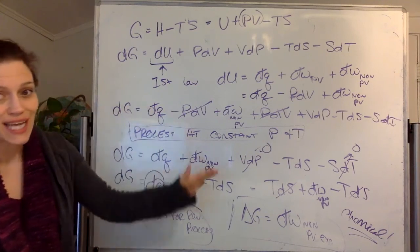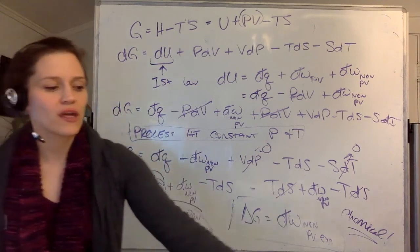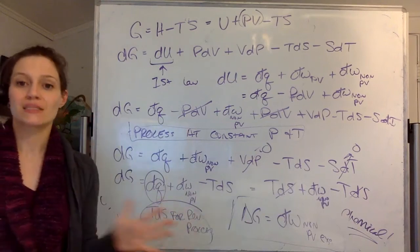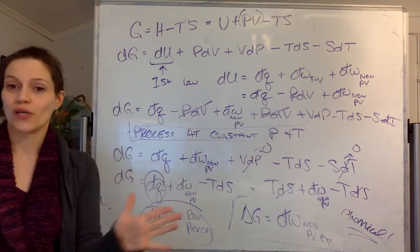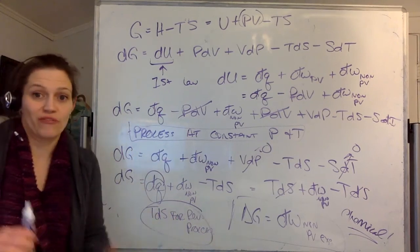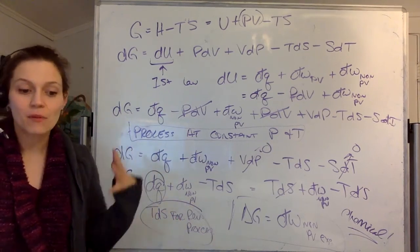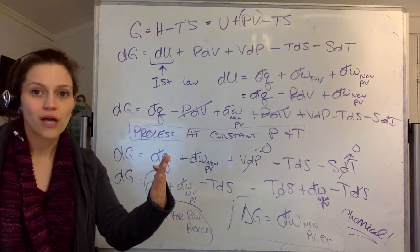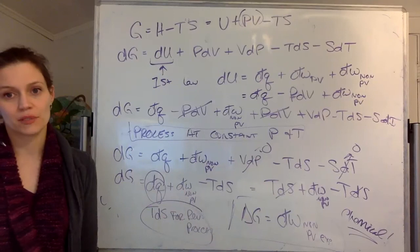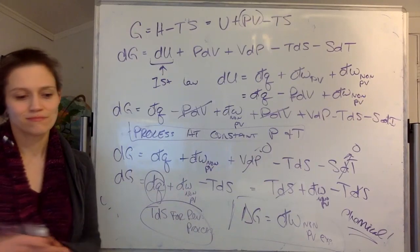And likewise, you can do this exact same thing with the Helmholtz energy, and you'll find the Helmholtz energy is the maximum possible work that you can get from a system, with no criterion associated with non-PV or not. So the maximum work, Helmholtz. The maximum non-expansion work, Gibbs. Go team.